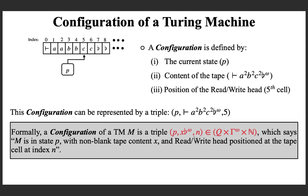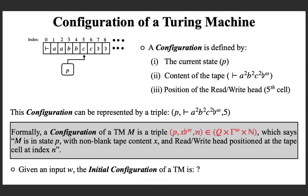This configuration says that the machine M is in state P, with non-blank tape content X — in this case the left-end marker followed by A, B, C squares — and the read-write head positioned at tape cell index M. Given an input W, the initial configuration of a Turing machine has the start state, tape content of left-end marker followed by W followed by infinitely many blanks, and the read-write head positioned at the zeroth cell, which is the left-end marker.